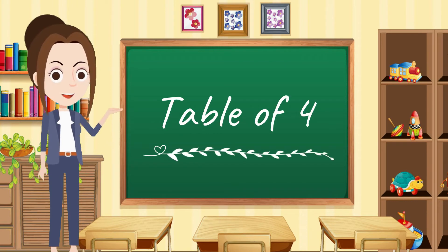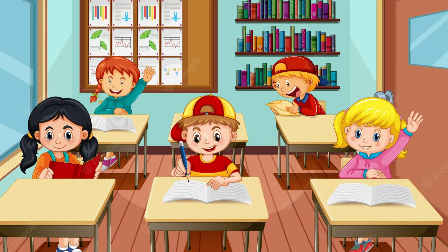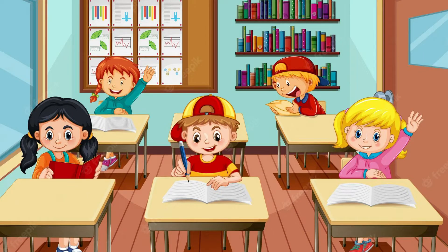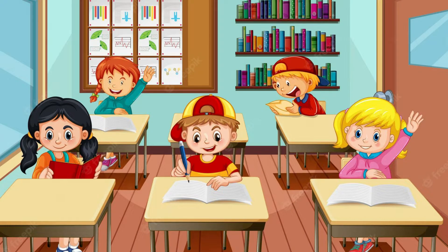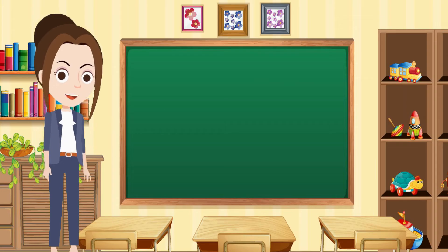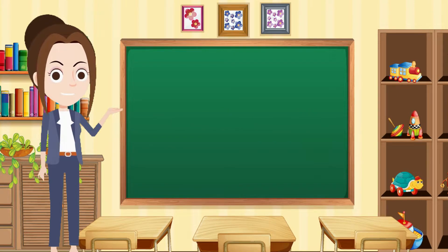Dear kids, time to learn the table of four. So let's start with me. Four ones are four. Four twos are eight. Four threes are twelve. Four fours are sixteen. Four fives are twenty. Four sixes are twenty-four. Four sevens are twenty-eight.